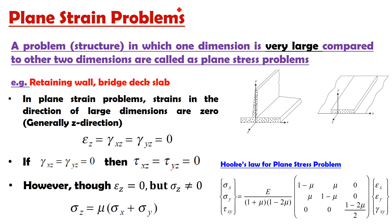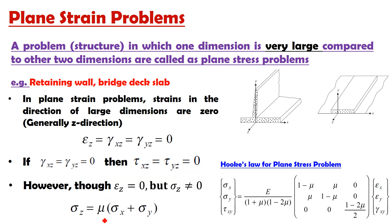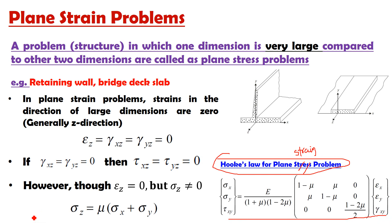To summarize the four points for plane strain: First, a problem in which one dimension is very large compared to other two dimensions is called a plane strain problem. Example: retaining wall or bridge deck slab. Second, strains in z-direction are zero: εz = γxz = γyz = 0. Third, if γxz and γyz are zero, then τxz and τyz are equal to zero. Fourth, though εz = 0, σz is not equal to zero: σz = μ·(σx + σy). This is also the two-dimensional Hooke's law for plane strain, available in many books.